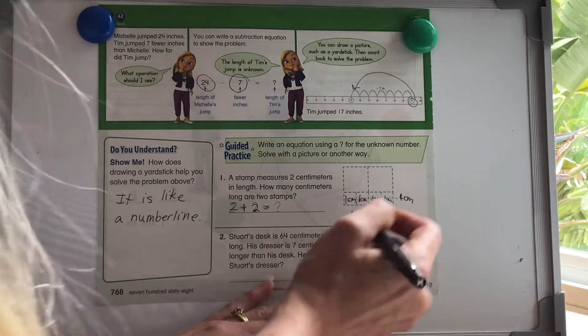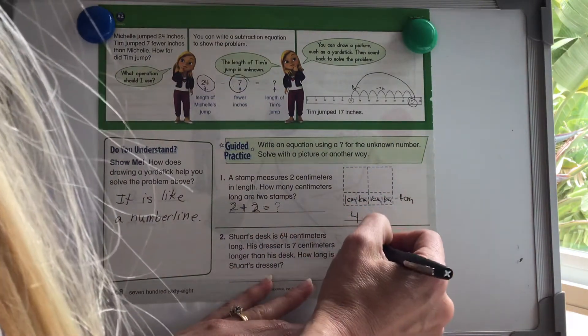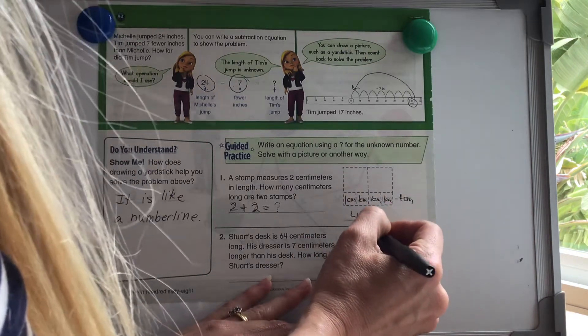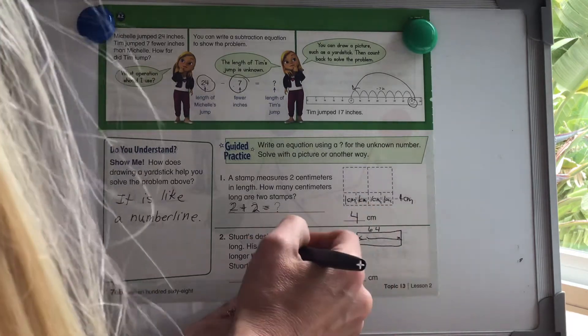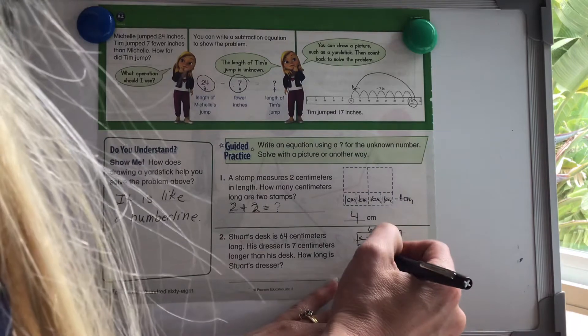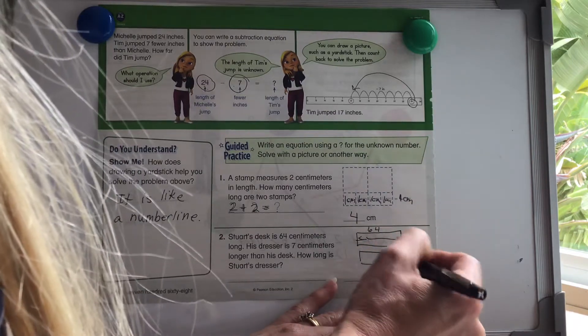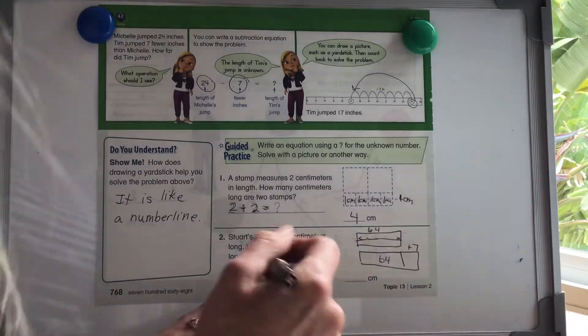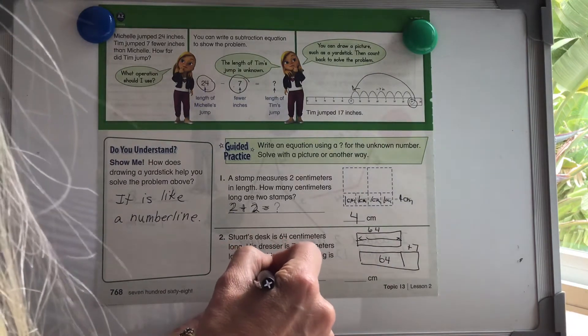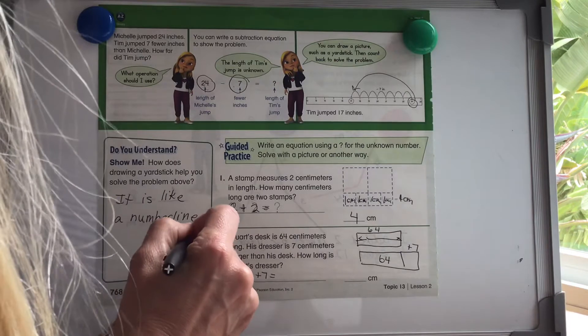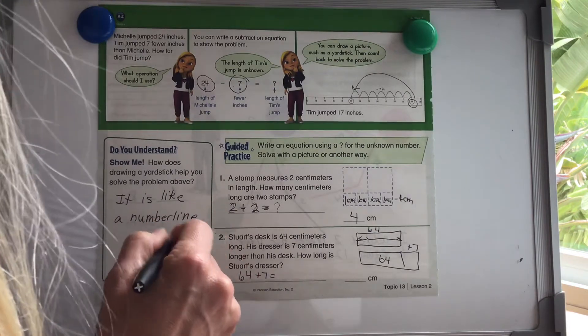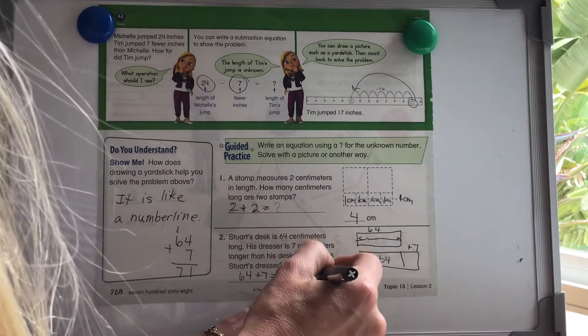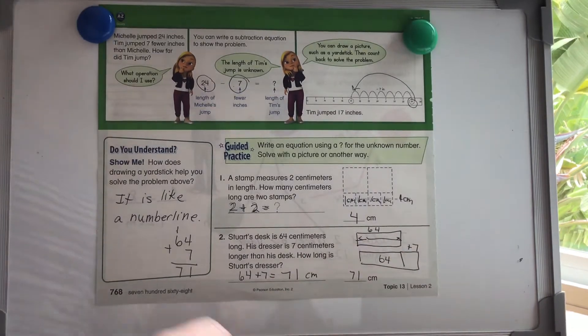Stewart's desk is 64 centimeters long. I'm going to just draw. His desk is 64, 64 across. His dresser is seven centimeters longer than his desk. So this is his dresser and it is plus seven. It is plus seven longer. How long is his dresser? Well, we know if this is 64 here and it's seven inches longer, we're going to add that 64 plus seven equals, I'm going to stack it, 64 plus seven. Four plus seven is 11 and one plus six is seven. So it equals 71 centimeters.